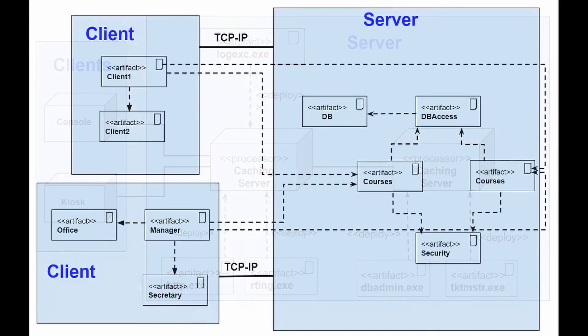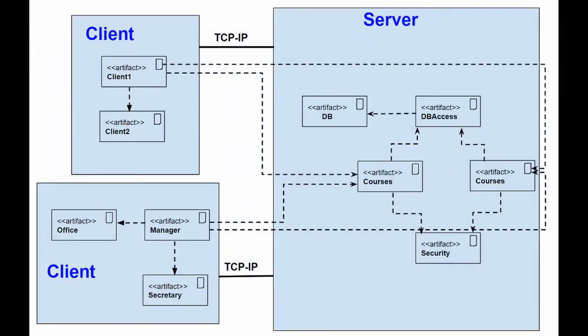A deployment diagram is just a special kind of class diagram that focuses on system nodes. Graphically, a deployment diagram looks like a collection of vertices and arcs.